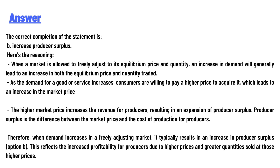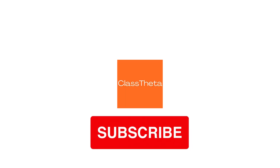Producer surplus is the difference between the market price and the cost of production of goods. Therefore, when demand increases in a freely adjusting market, it typically results in an increase in producer surplus, reflecting the increased profitability for producers due to higher prices and greater quantity sold at those higher prices.